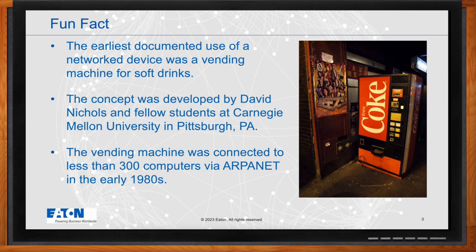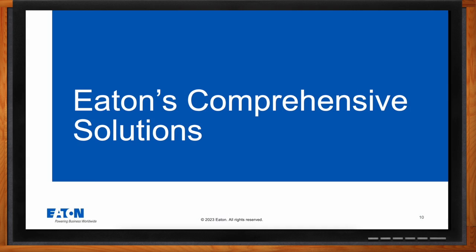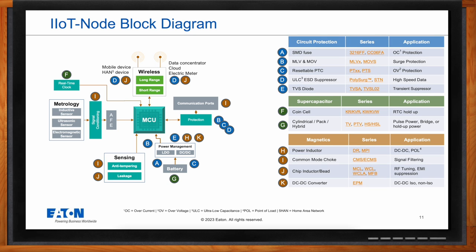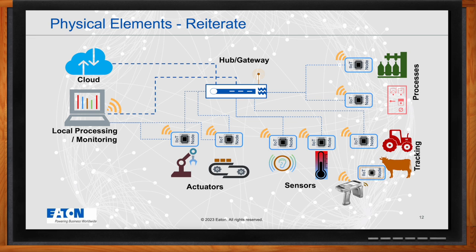Here is a block diagram of an IoT node, which can be customized based on specific requirements. The components in the node are similar to those used in standard electronics design — circuit protection is crucial for safety of electronic circuits, magnetics play a role in maintaining noise-free power and communication design, and supercapacitors can be utilized for backup and auxiliary power. Eaton Electronics offers products that can be used for designing IoT nodes as well as hubs, computers, servers, and other electronics.